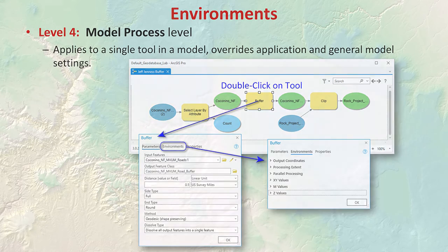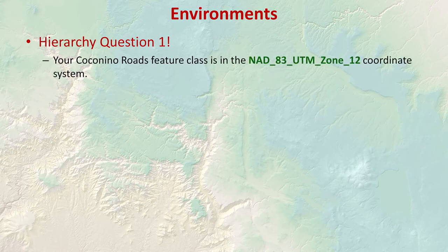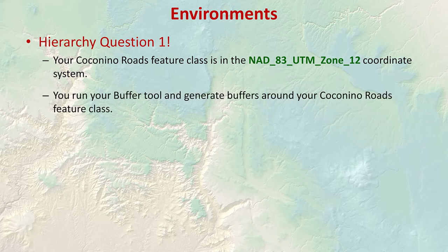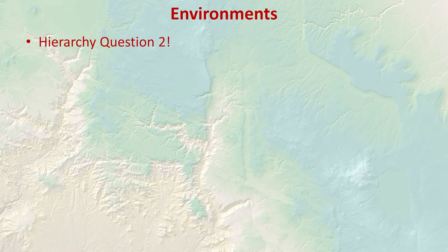Within the model itself, you can set a model-tool setting that applies to a single process and overrides any application or model-level environment settings. Now let's think about the consequences of these hierarchies — there are four questions that will also be on your homework. Suppose we have a roads feature class for the Coconino National Forest in UTM Zone 12, projected from NAD83. We run the buffer tool with no specific environmental settings. What coordinate system will those buffers be in? With no settings, there's no reason for ArcGIS to do anything special, so the buffers will be in the same coordinate system as the source data.